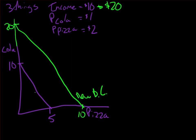A very important thing to notice is that these two lines are parallel — the little arrows are used mathematically to represent two parallel lines. So a small increase in income would result in a small parallel shift outward, and a larger increase like doubling the income level results in a larger parallel shift out. This is what happens when income increases, or when a gift certificate or whatever allows us to purchase more.